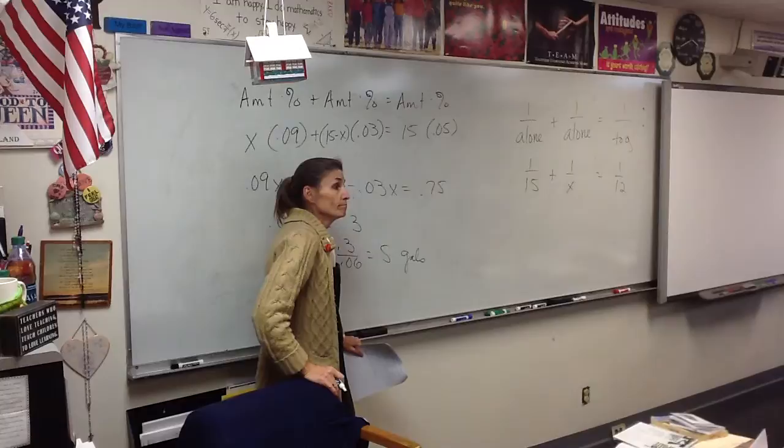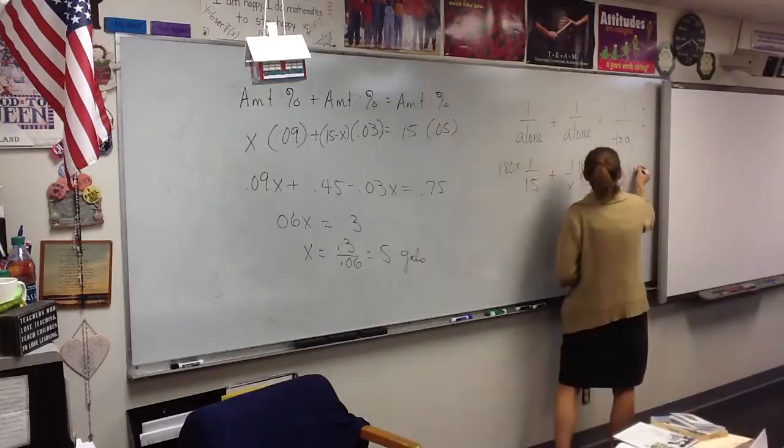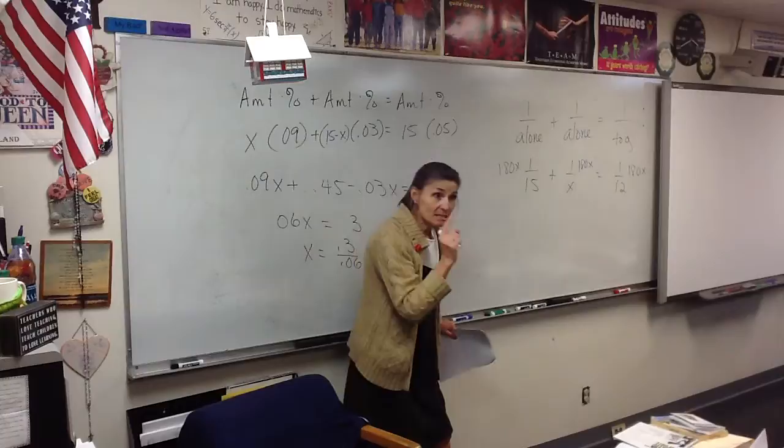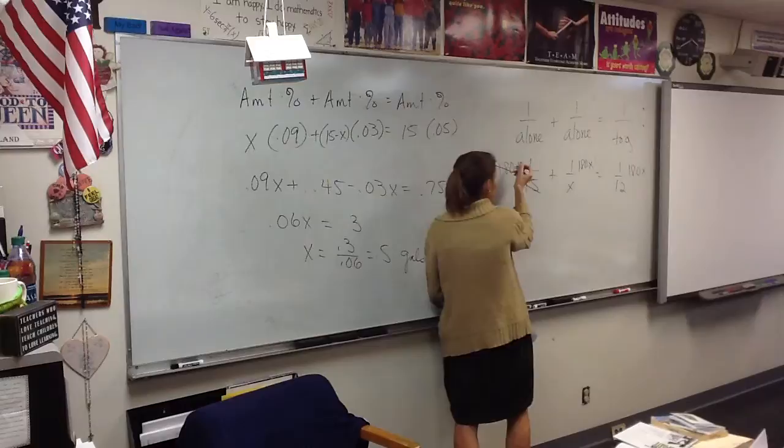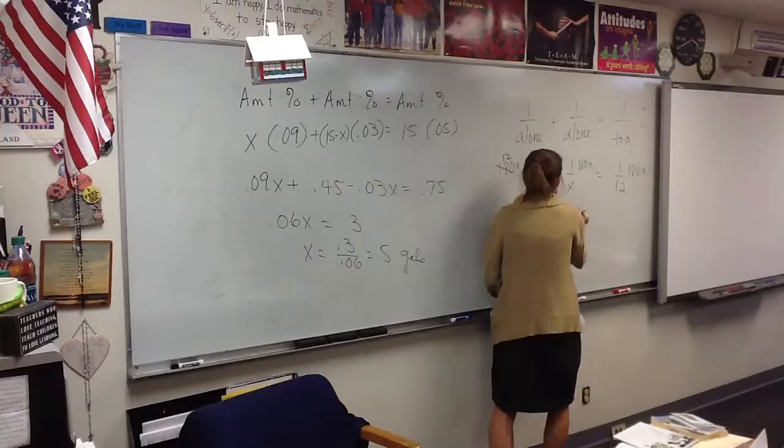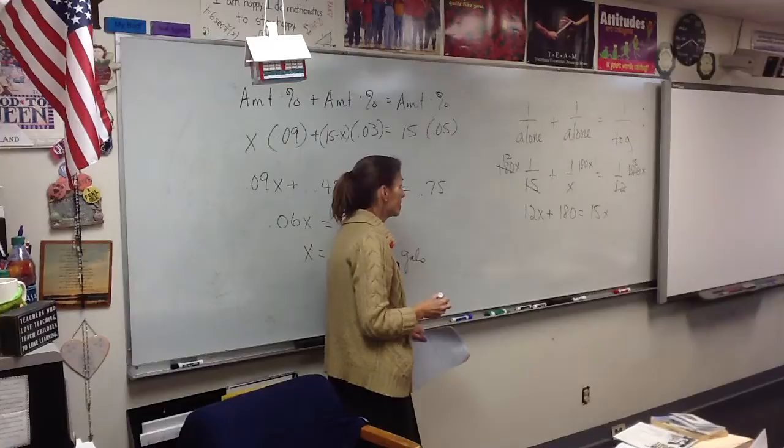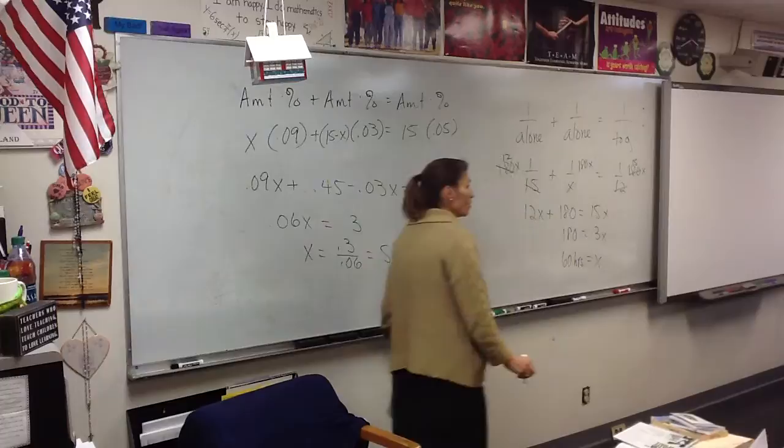All right, what do you do from here? Moses says, I'm going to multiply everything by 180x. Now, how did Moses get 180? 15 times 12. Could he have used a different number? Yes. But if it's easier for you just to do 15 times 12 and use 180, that will work every time. So here we go. 15 goes in here 12 times, so that's 12x plus 180. 12 goes into there 15 times, that's 15x. So 180 equals 3x, and how long does it take Zane by himself? 60. 60 hours.